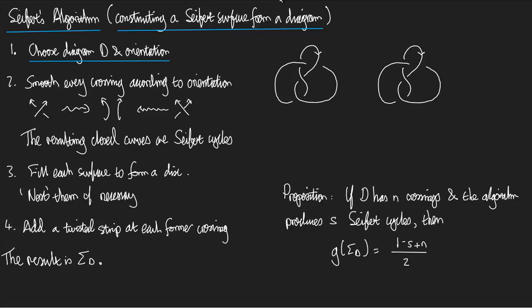Step two. Smooth every crossing according to the orientation. In other words, for each crossing, I look at the outward pointing arrows and I smooth it in the way that's compatible with those arrows. So, let's do that in the example.